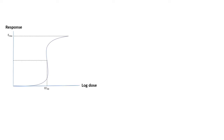In our previous lectures we discussed the dose-response curve. In this curve we plotted log dose against response and got a sigmoidal curve in which if we increase the dose we get an increase in response, until we reach a plateau at which any increase in the dose does not produce an increase in response — we reach what we called Emax or the maximum efficacy.